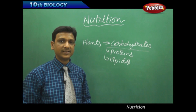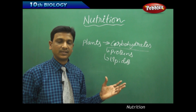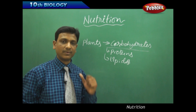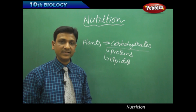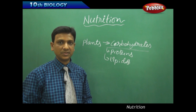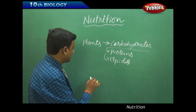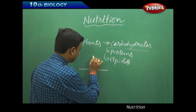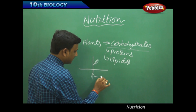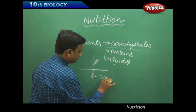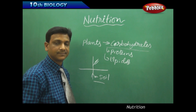So what materials does the plant use? We discussed that carbon dioxide, water, and it needs some minerals. The source of minerals is the soil — the plant gets the minerals from the soil.